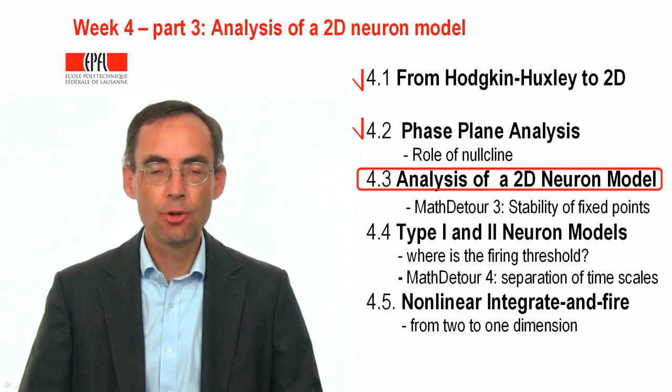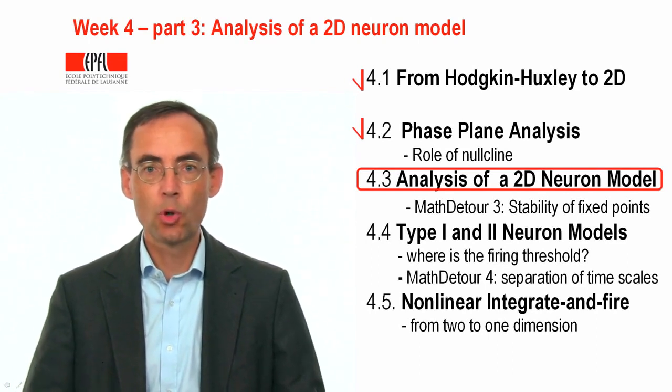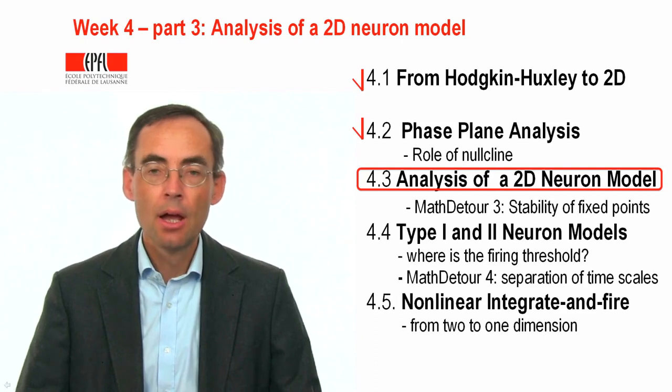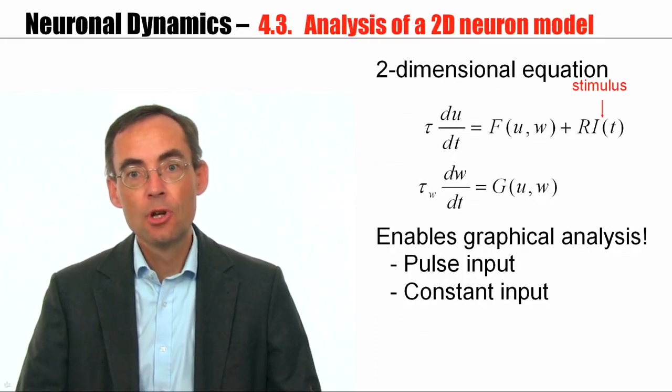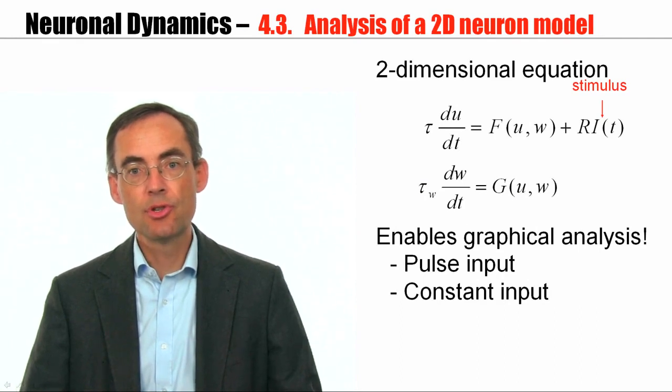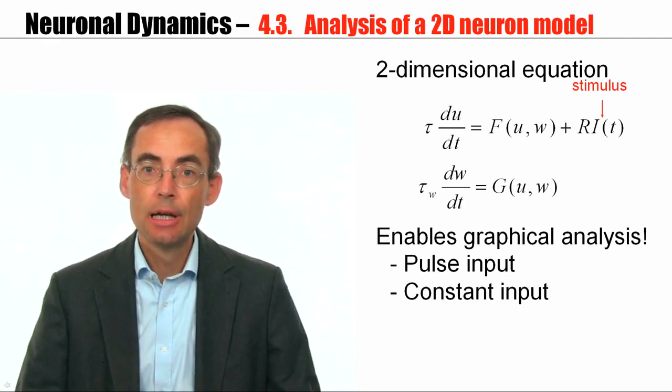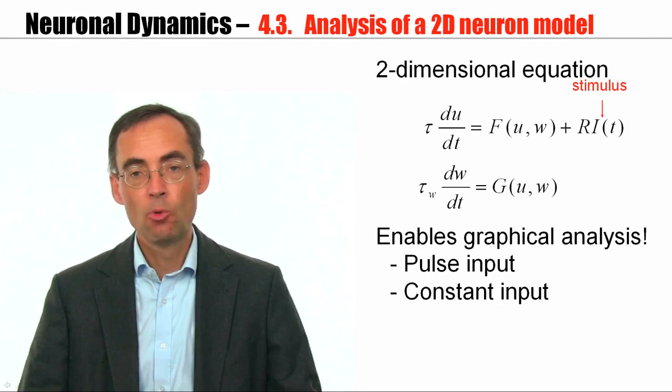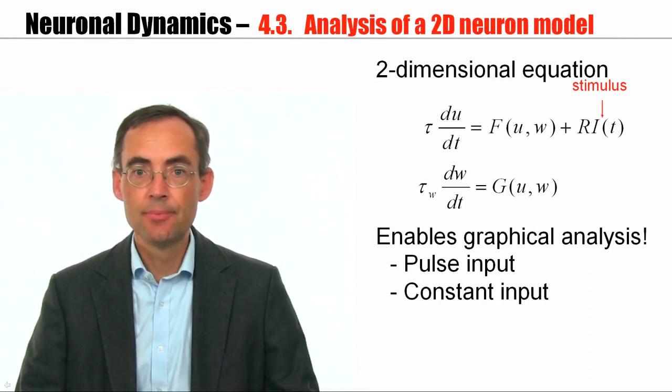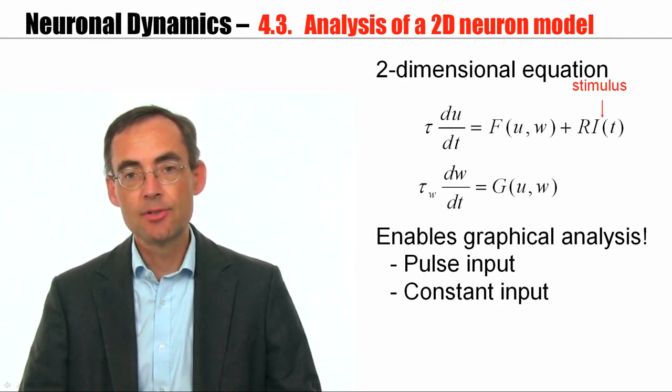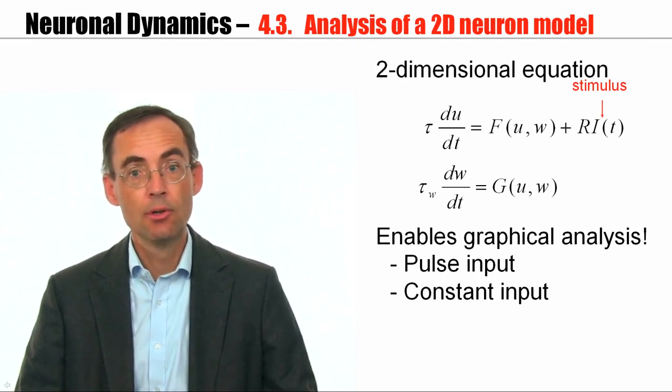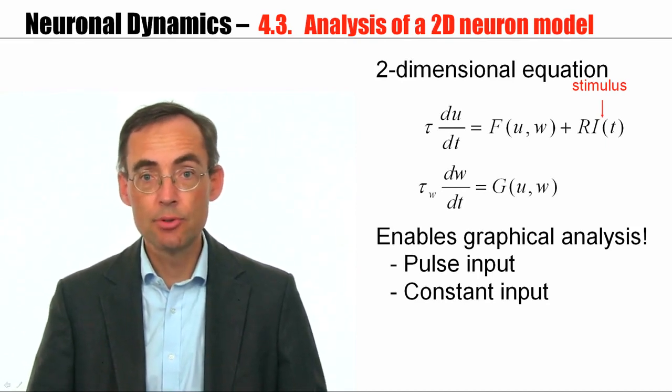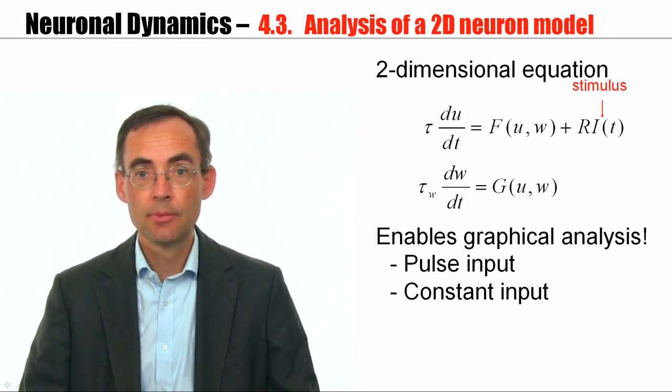Welcome to part 3 of week 4 of the class Neuronal Dynamics. I promised that once we have reduced the system to two equations, we can do a lot of things. We can do phase plane analysis, and phase plane analysis can be used to understand spike generation, for example, during pulse input or during constant input. This is the topic of this part.